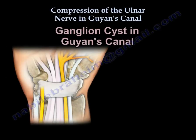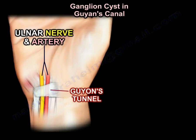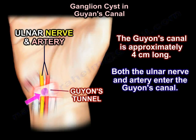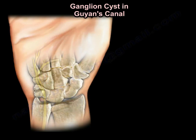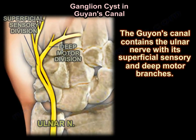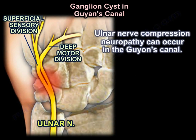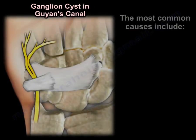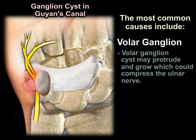Compression of the ulnar nerve in Guyon's canal by a ganglion cyst. Guyon's canal is approximately 4 cm long. Both the ulnar nerve and artery enter Guyon's canal. The canal contains the ulnar nerve with its superficial sensory and deep motor branches. Ulnar nerve compression neuropathy can occur in Guyon's canal, with the most common cause being a volar ganglion cyst, which may protrude, grow, and compress the ulnar nerve.